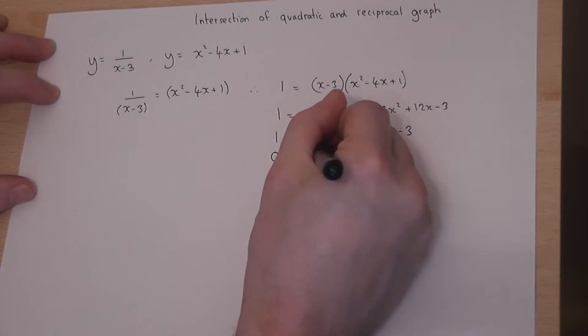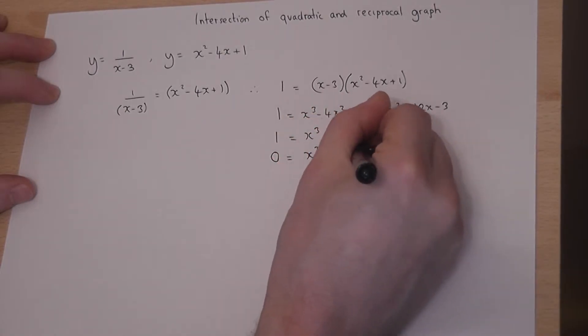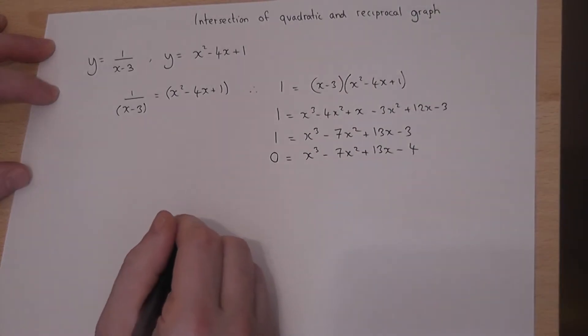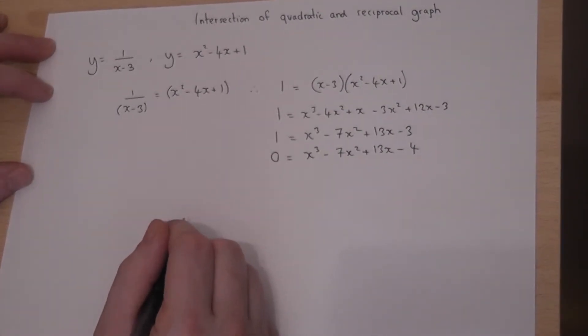0 equals x³ - 7x² + 13x - 4. So that is the equation which I need to somehow solve.